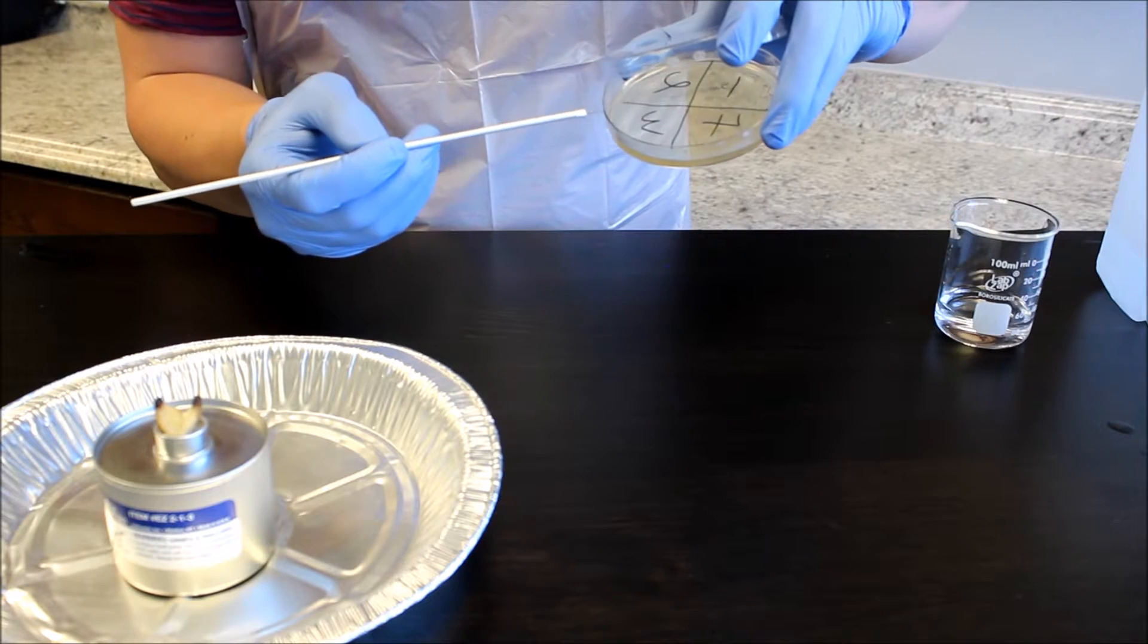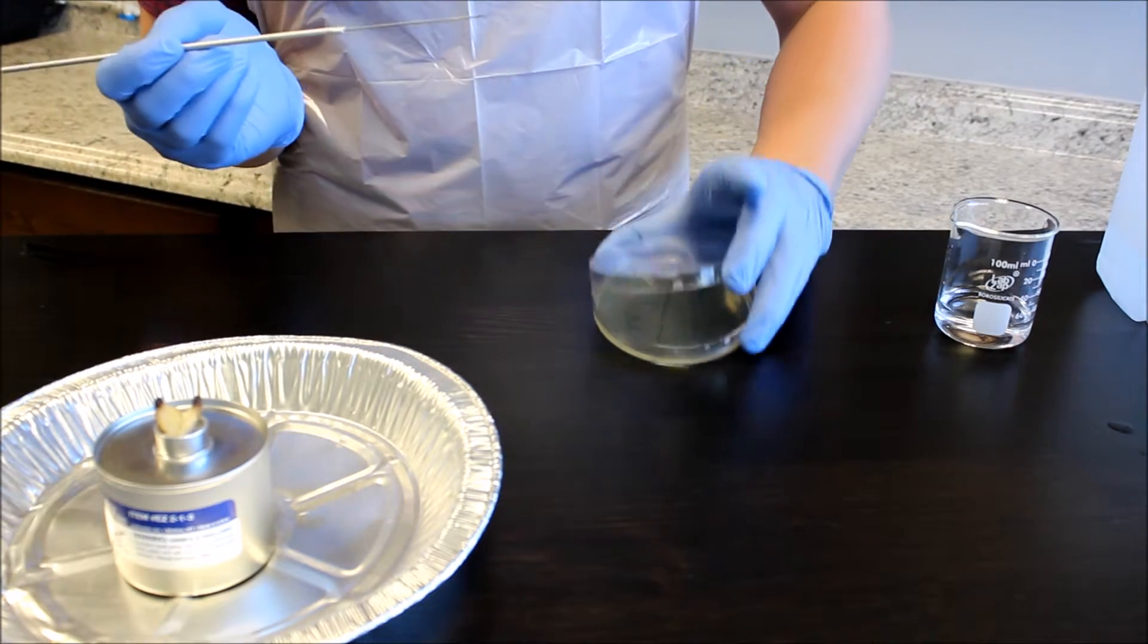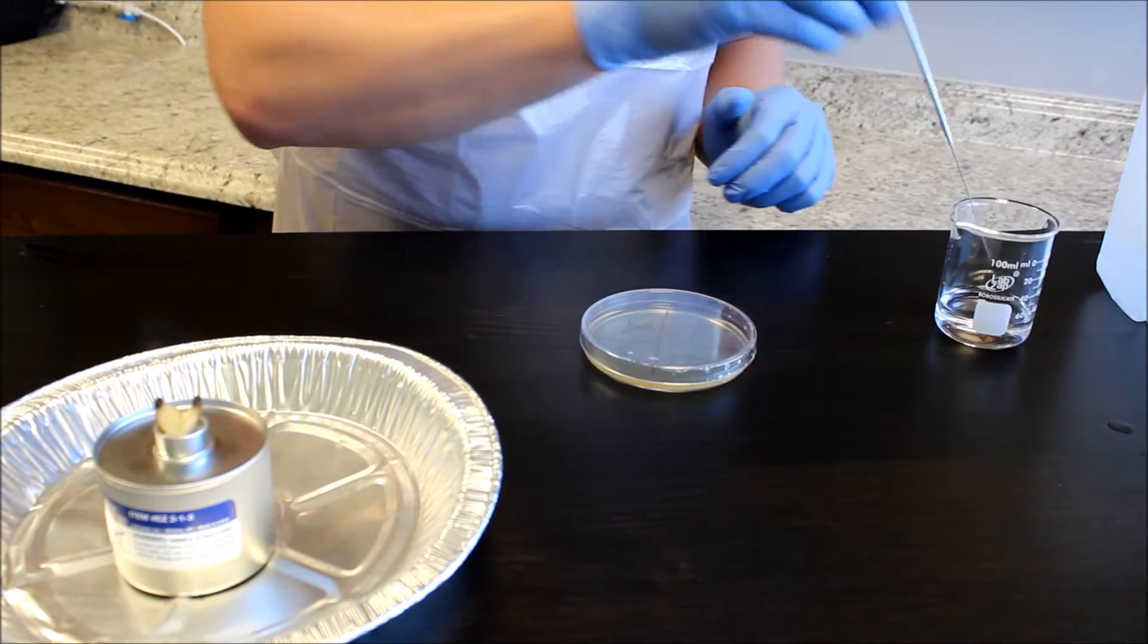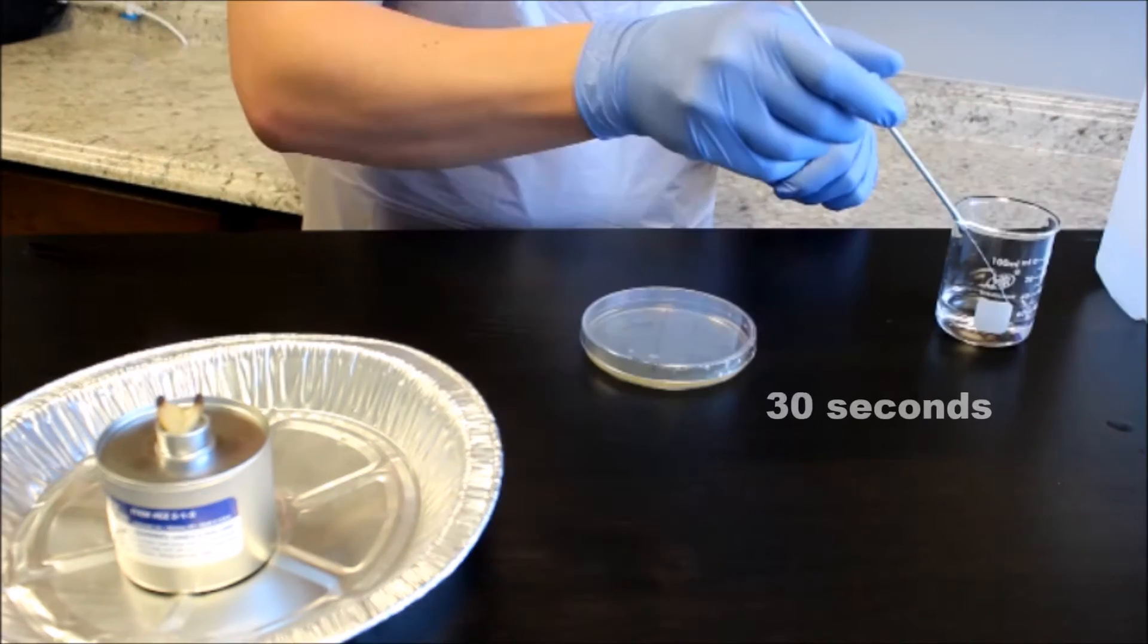Insert the loop and streak the first quadrant. Remove the loop, close the lid, and return the loop to the beaker of alcohol for 30 seconds.